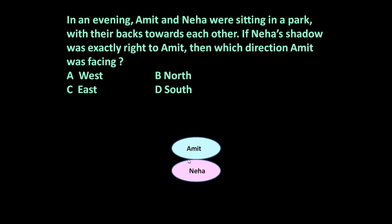Let us draw Amit and Neha. This is the back side of Amit and Neha — Amit is facing this side, Neha is facing this side. Neha's shadow was exactly to the right of Amit. So this is the right of Amit and this is the left of Amit. Neha's shadow is to the right of Amit, meaning this is the shadow of Neha towards this direction.